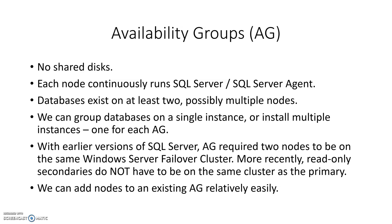With earlier versions of SQL Server, availability groups require two nodes to be on the same Windows Server failover cluster. For read-only secondaries, you do not have to be on the same cluster as the primary SQL Server instance anymore. With SQL Server 2017, we have an option to implement clusterless secondaries, meaning that secondary nodes can reside on a standalone machine that is not part of the original cluster. Note that with a clusterless availability group, you only have the option of manual failover, not automatic failover.